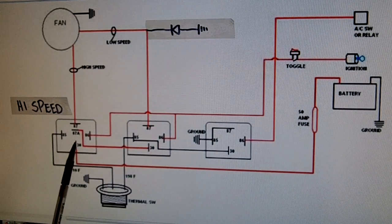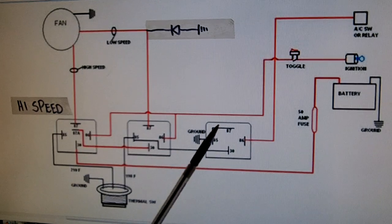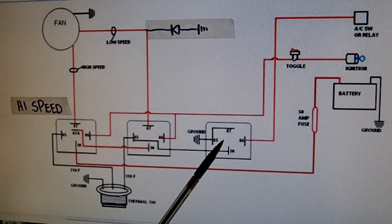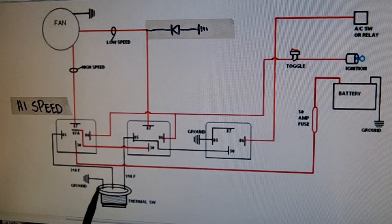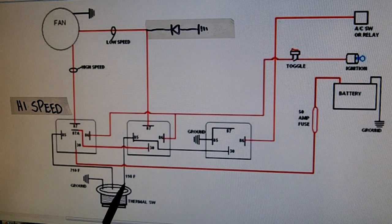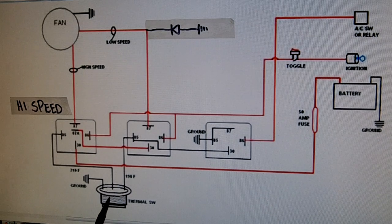You got your high speed relay, low speed, and if you have air conditioning you're going to need another relay. And then you got your TS-139 thermal switch, the one I described in the earlier videos using out of a Saab.